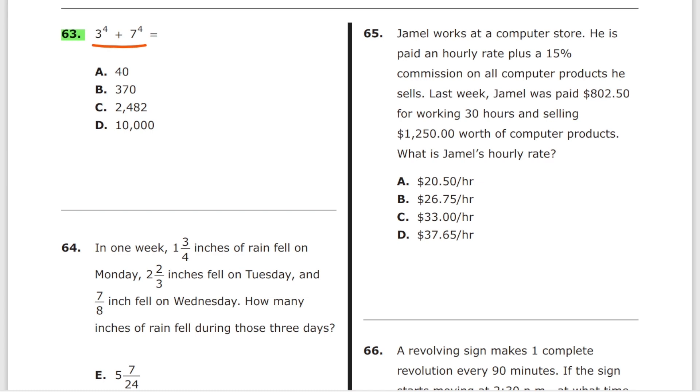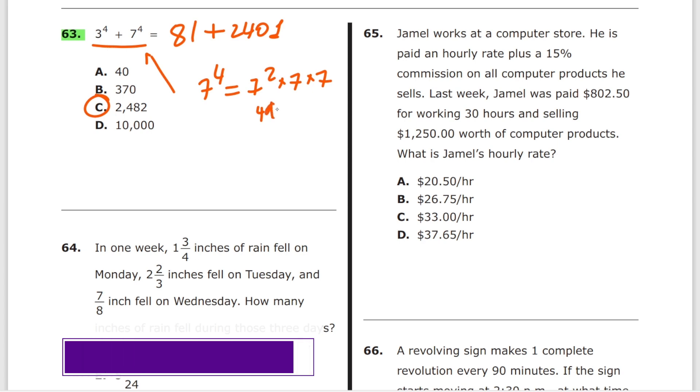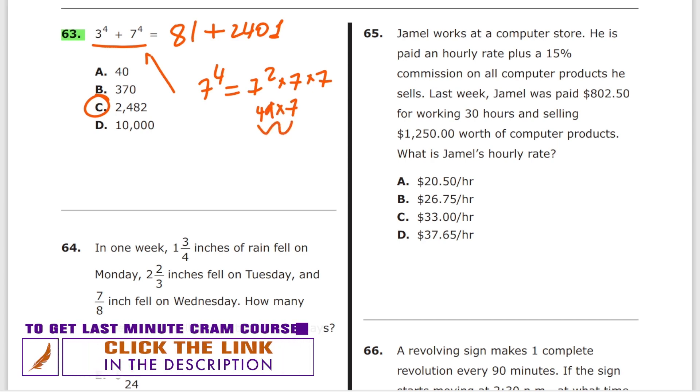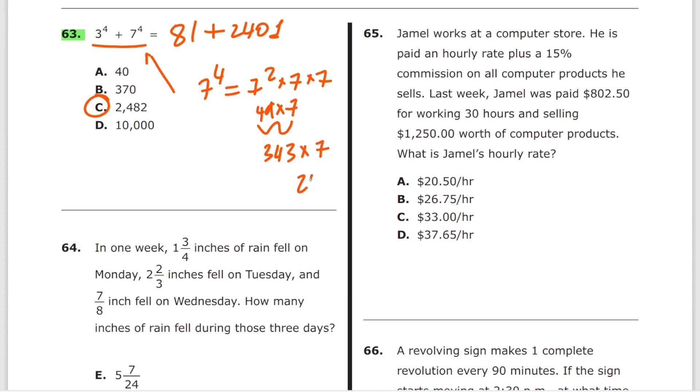If you memorize the exponent tables shown prior, you will be able to answer this question super fast. Three to the fourth power, I personally know off the top of my head, 81. Seven to the fourth power, I know off the top of my head, 2401. You add those up and you see the answer, it's C. It's extremely simple. You don't know your mental math, you'll spend quite a lot of time on this problem. Three to the fourth you may be able to figure out. Seven to the fourth, you'll do seven squared times seven times seven. This is going to be 49 times seven. That will take you forever. Then whatever that answer is, which is 343, you multiply this by seven to get to 2401. Just memorize the table, guys.